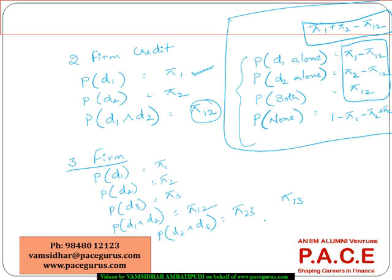Then similarly, I am talking about all three firms defaulting, probability of d1 and d2 and d3, pi 1, 2, 3. And now if I want to talk about the probability of d1 alone, d2 alone, now there is a huge effort that is going in. And overall, we will end up with finding out eight different probabilities, which is nothing but 2 cubed.